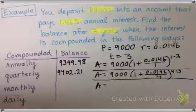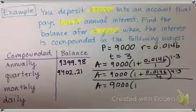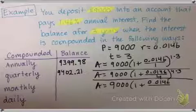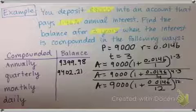Let's try monthly. So this time, our n value is 12, and we raise it to the power of 12 times 3, nt.